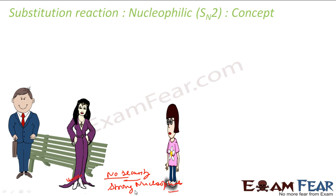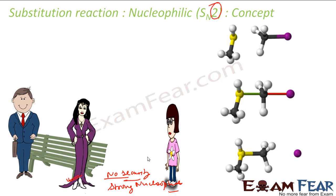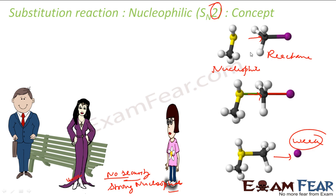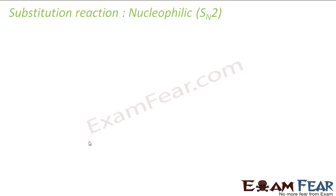These things favor SN2 reaction. Someone very strong comes and influences and kicks the leaving group out — that is SN2 reaction. It is called SN2 because it is bimolecular: the rate depends on the strength of both the reactant and the nucleophile. This is the typical example of SN2 reaction. The nucleophile is strong, it comes and attacks; the leaving group is weak and leaves. This is all one step.